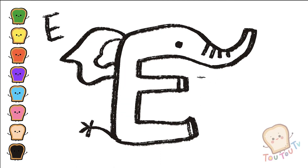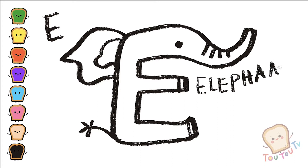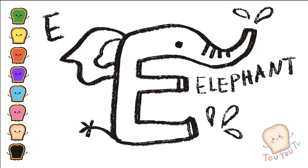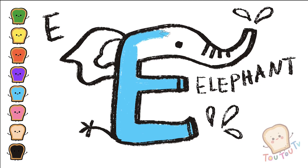Elephant is spelled E-L-E-P-H-A-N-T. Elephant. E is for elephant.